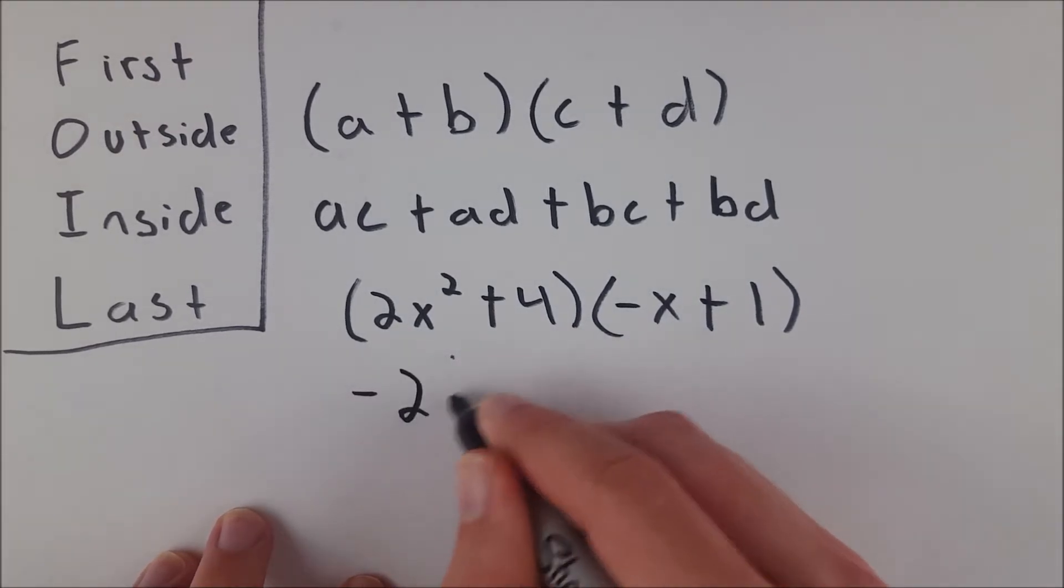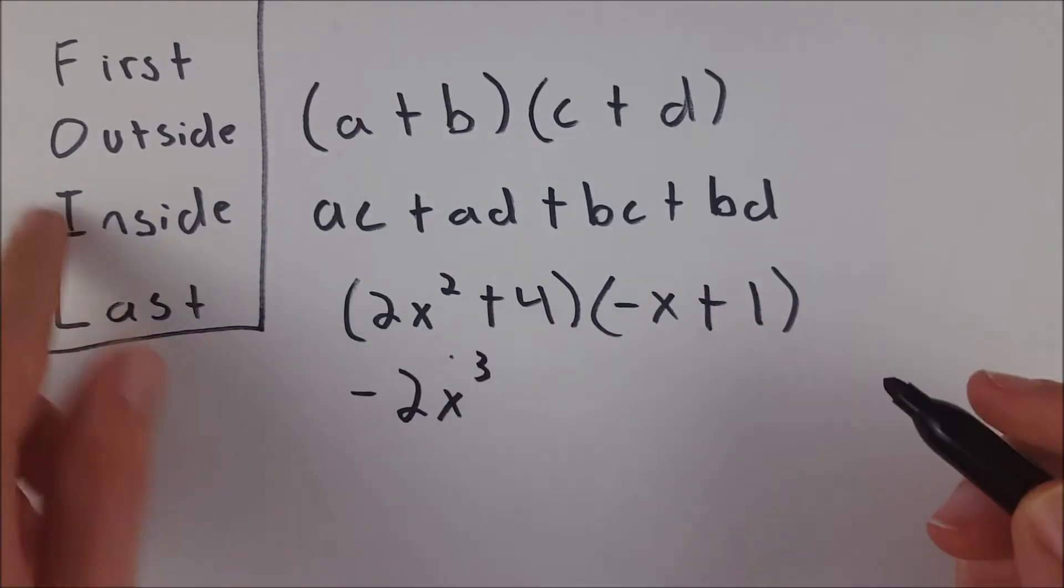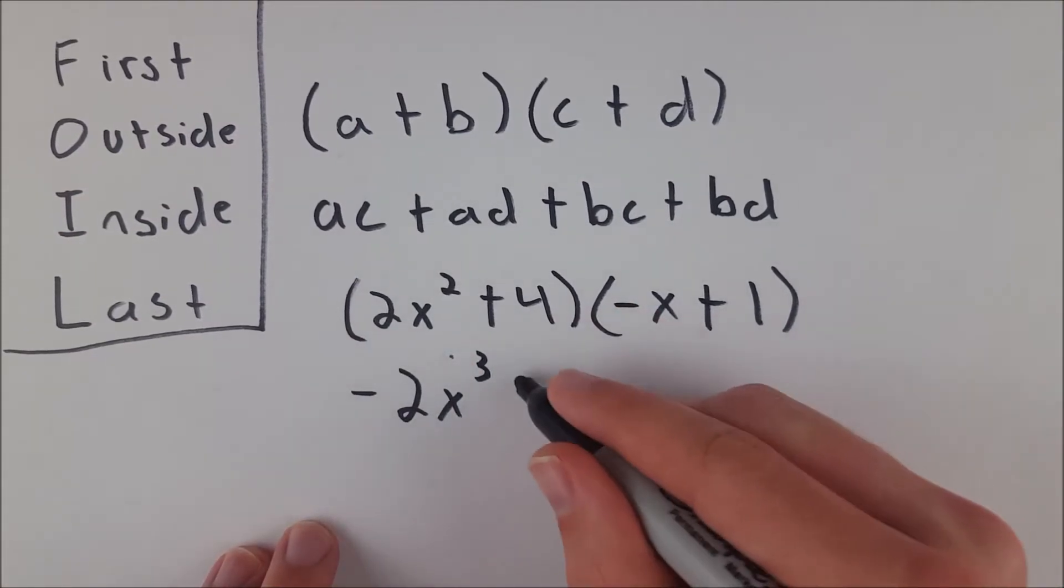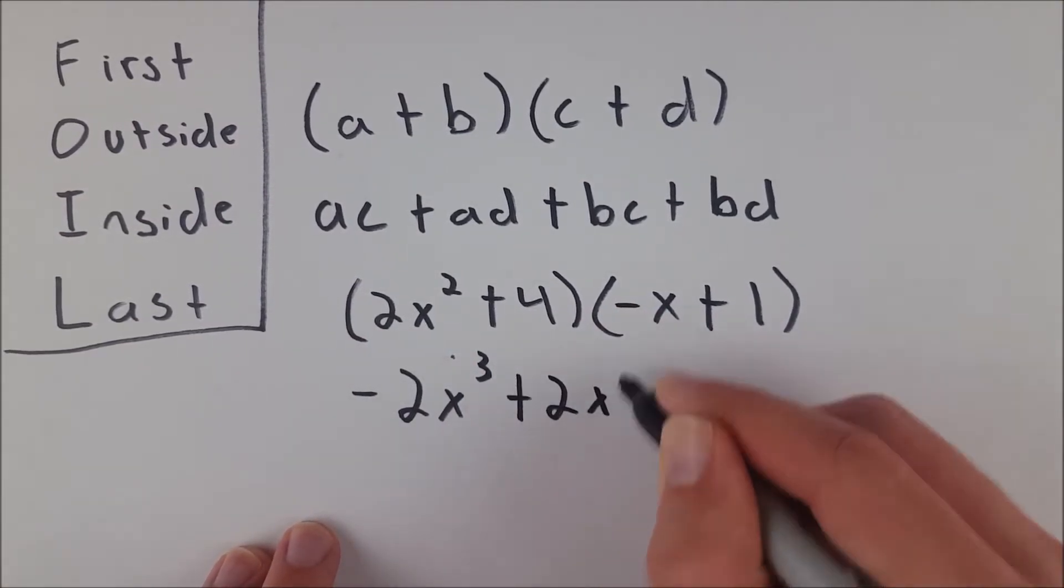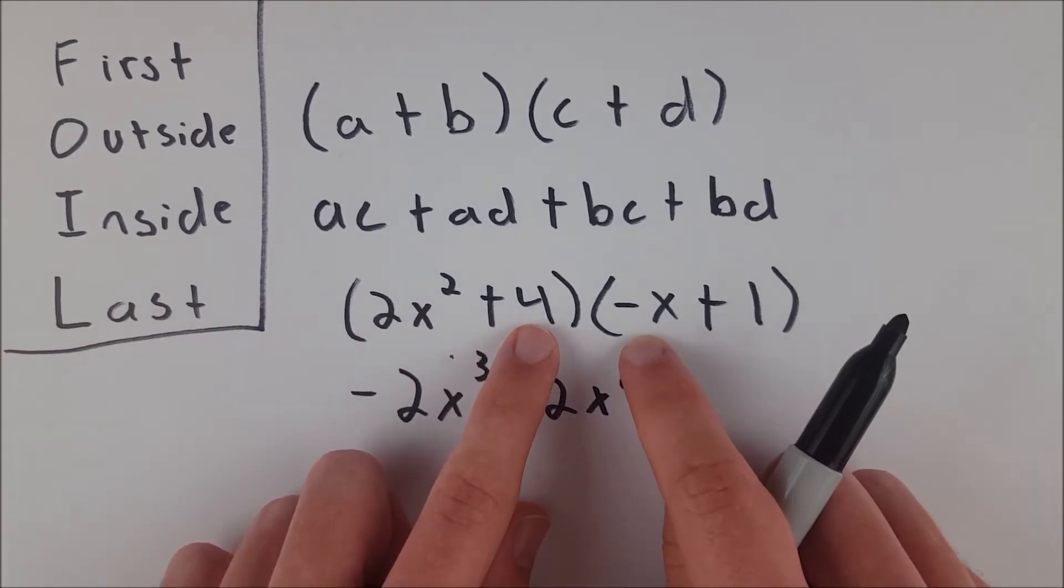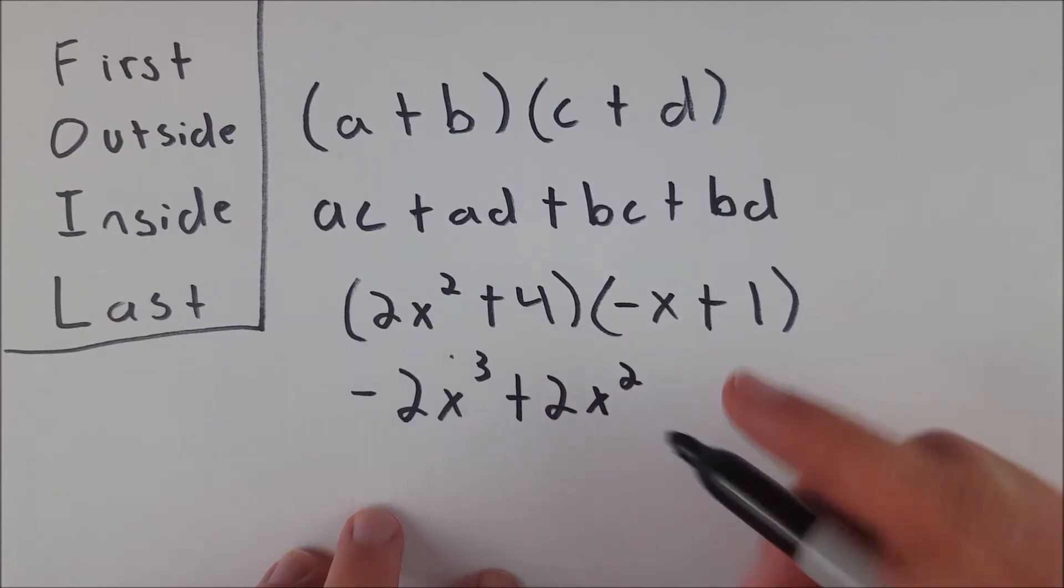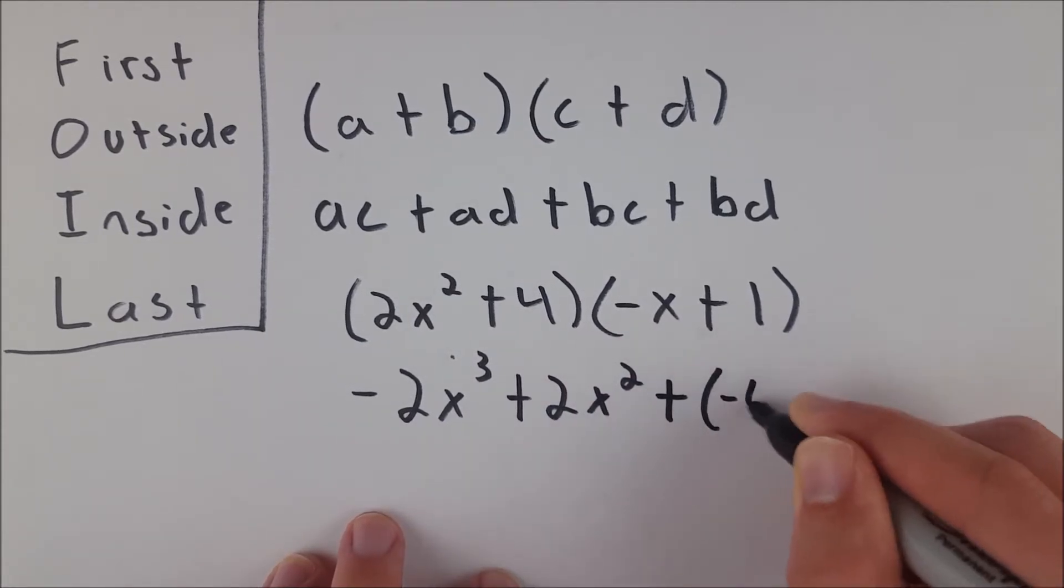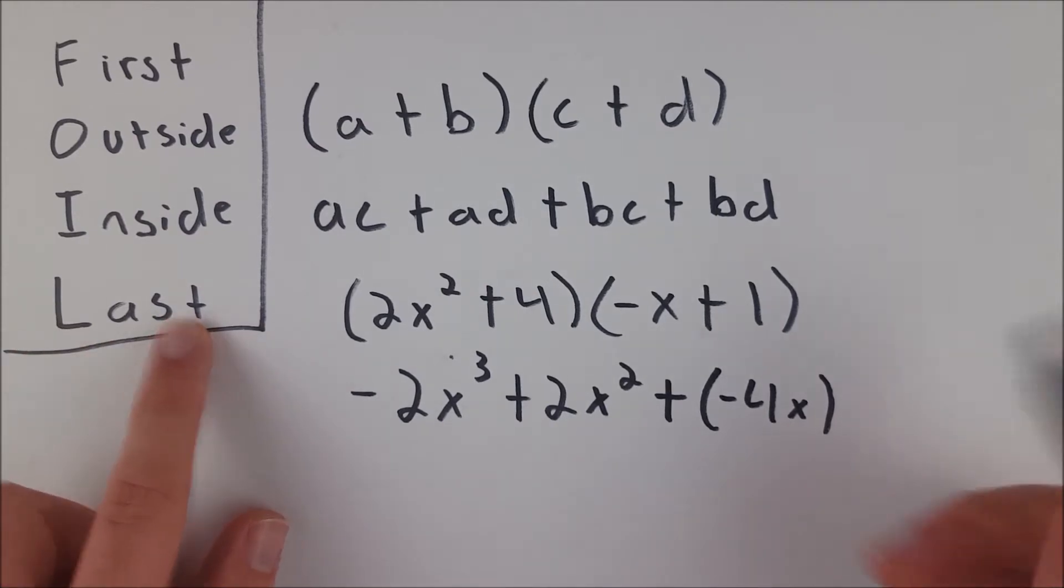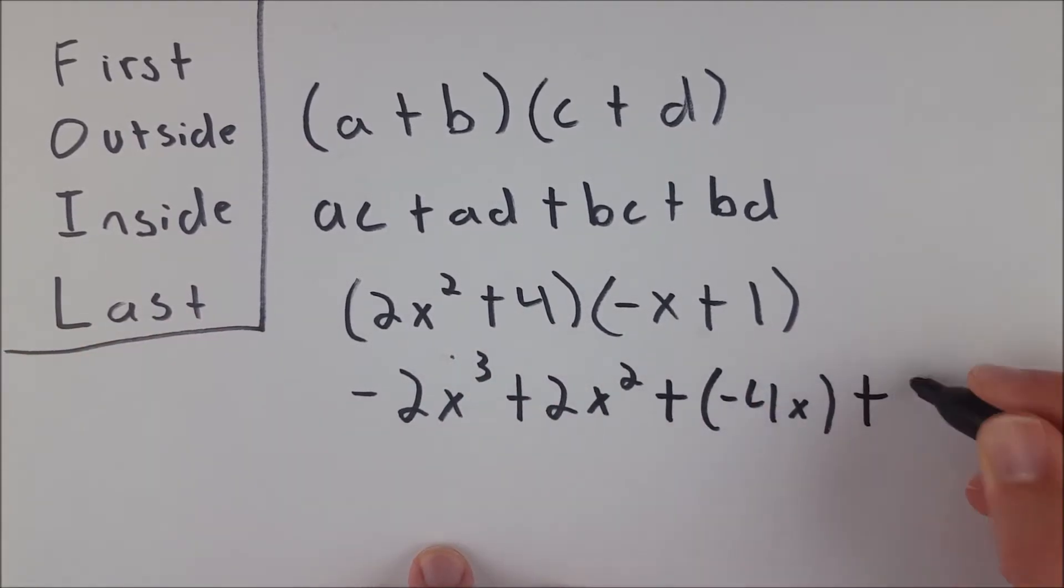Then we multiply our outside terms, 2x squared multiplied by 1. That's just 2x squared. Then we have our inside terms, 4 times negative x, so we add negative 4x. Then the last step is to multiply our last terms, 4 times 1. That's a plus 4 right there on the end.